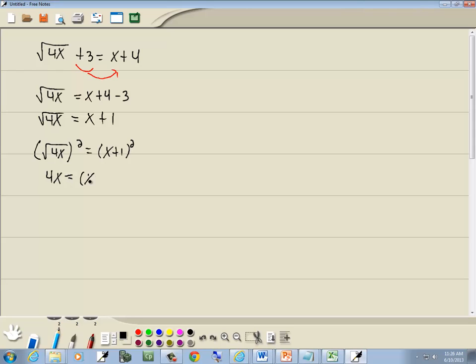x plus 1 squared is x plus 1 times x plus 1. x times x is x squared. x times 1 is x. 1 times x is x. And 1 times 1 is 1. Combine like terms: x plus x is 2x.